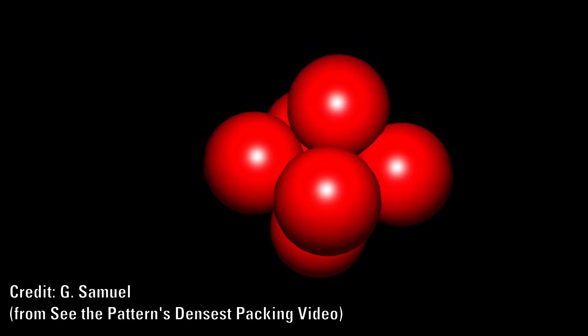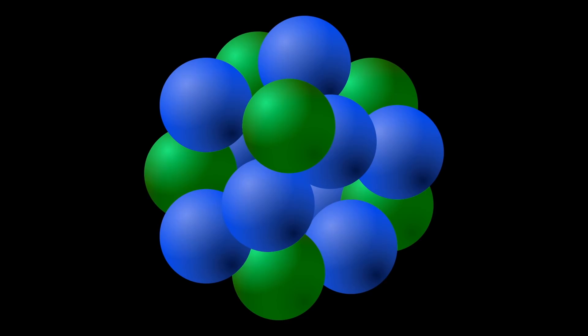Even more remarkable is that this structure and its instabilities in certain parts perfectly matches and explains why certain elements are unstable and why they decay into specific products. So why is this relevant to muons?